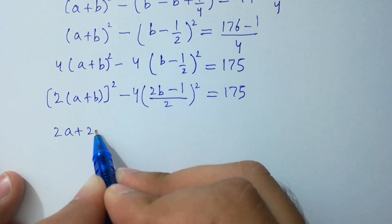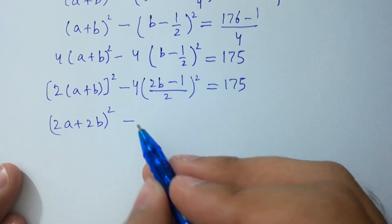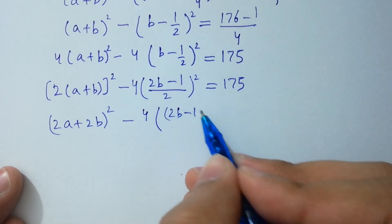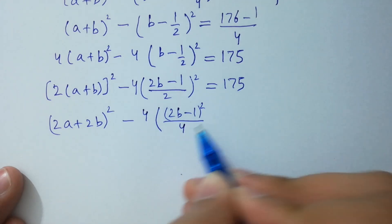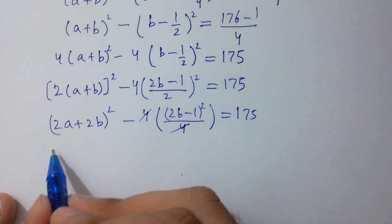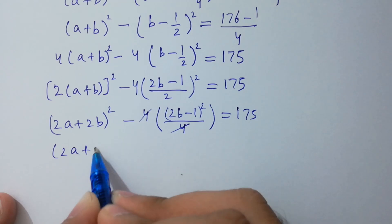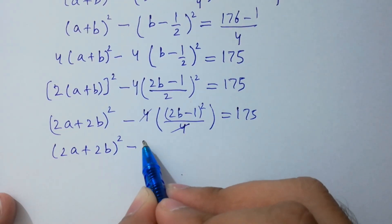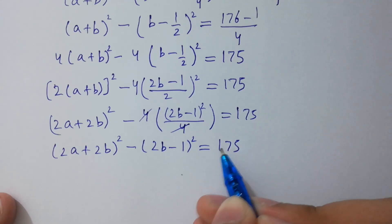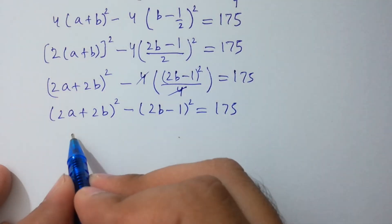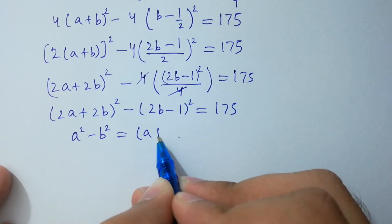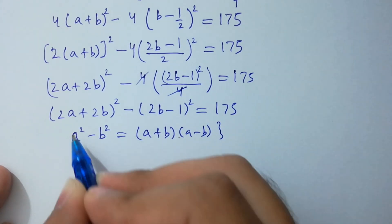2² = 4, so (2a + 2b)² - (2b - 1)² = 175. Now apply the formula a² - b² = (a + b)(a - b). So we get (2a + 2b + 2b - 1)(2a + 2b - 2b + 1) = 175.